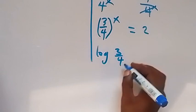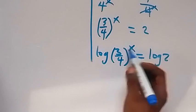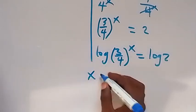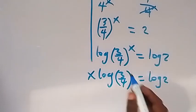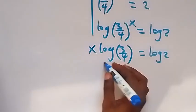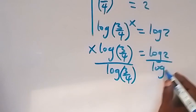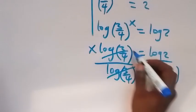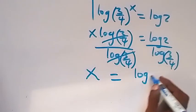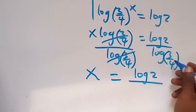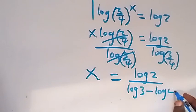We have log of 3 over 4 to the power of x equals log 2. Applying the power rule of logarithms, the power of x can be brought down, giving x times log 3 over 4 equals log 2. Dividing both sides by log 3 over 4, we get x equals log 2 divided by log 3 over 4, which by the law of logarithms equals log 2 divided by log 3 minus log 4. This is our second value of x.